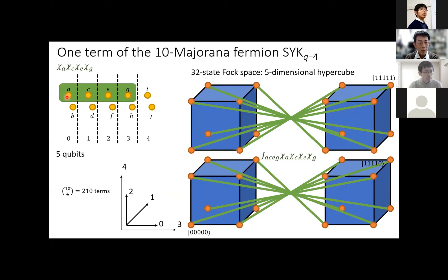We can combine two Majorana fermions to create one Dirac fermion or a qubit. For 10 Majorana fermions, we can consider five qubits, each taking states 0 and 1, giving 32 states in the Fock space. Each Majorana fermion flips the complex fermion state differently depending on whether you have A or B in your term. This particular term J_ACEG times chi_A chi_C chi_E chi_G connects states four hops apart in the five-dimensional hypercube representing the 32-state many-body Fock space, connecting states like 00000 and 11110, as well as other 15 pairs of sites.